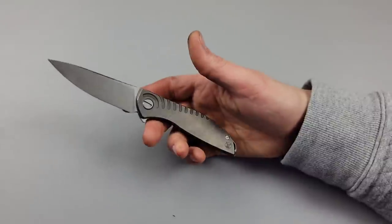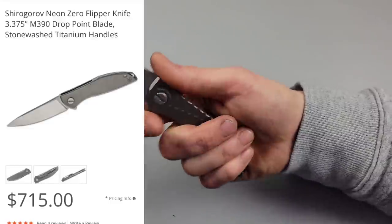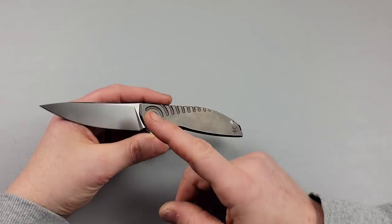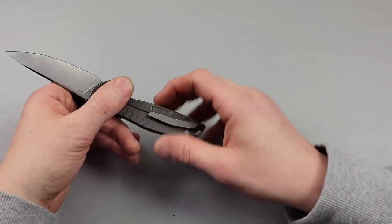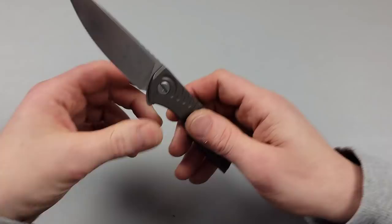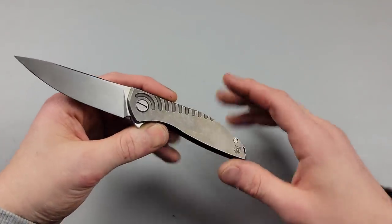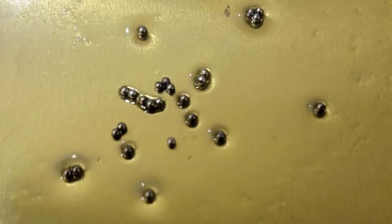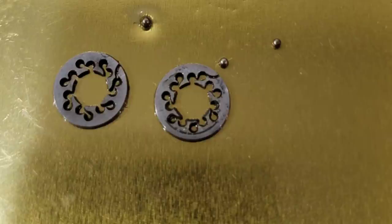Now this is the Shirogorov Neon and it came in for a new edge and the clip was really loose and it was dirty and filthy and just needed to clean up, needed a nice tune-up, so I took off all the parts. Now one thing about these is they have loose bearings. I soaked all the loose bearings in some alcohol. They're individual, they're very easy to lose.